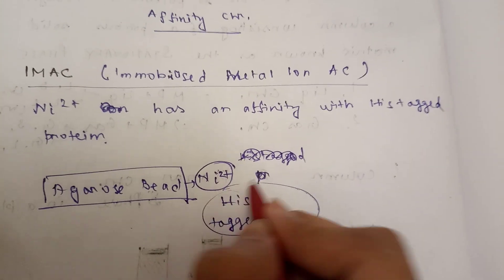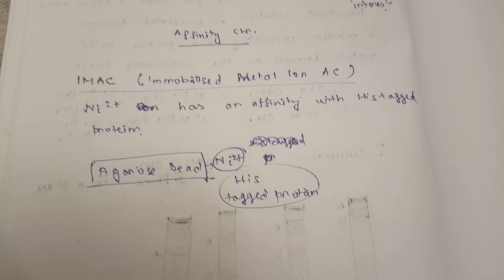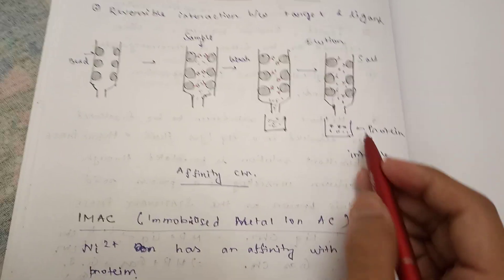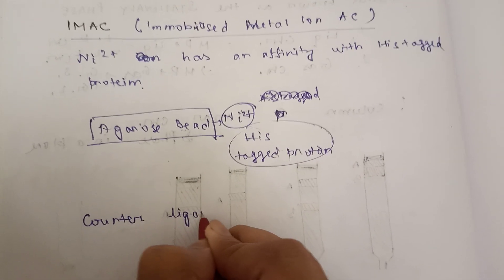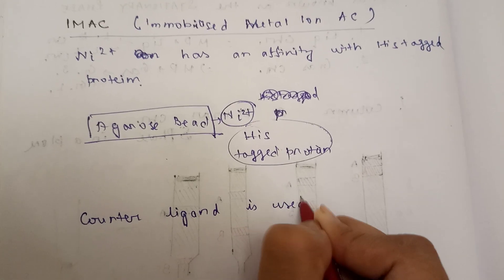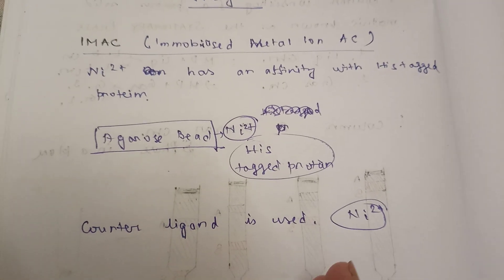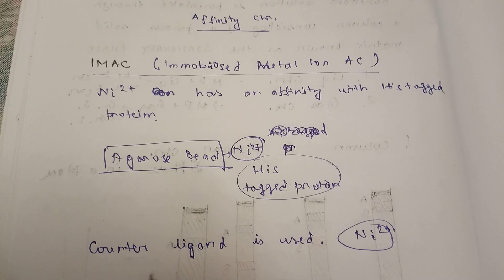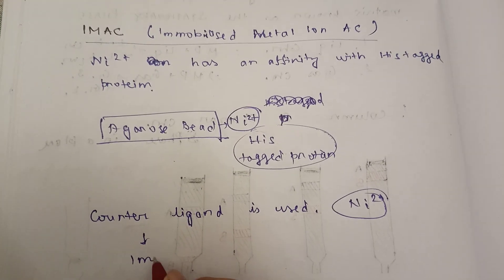The His-tag protein will bind to the nickel part. In IMAC, unlike antigen-antibody chromatography where salt concentration is increased to elute the protein of interest, a counter ligand is used instead. The counter ligand in nickel-based IMAC is imidazole. Why imidazole? Because histidine actually possesses the imidazole structure.